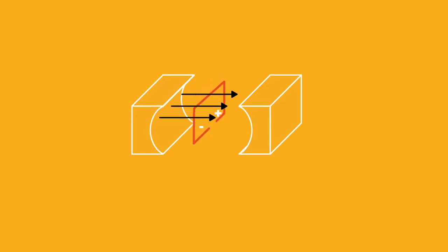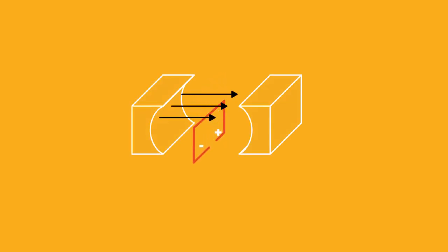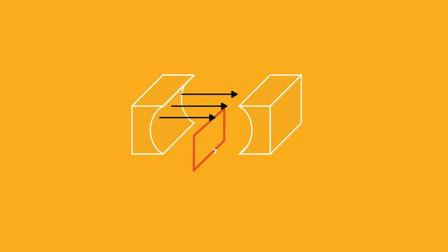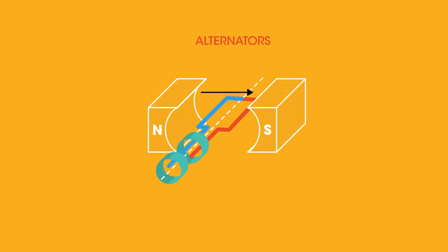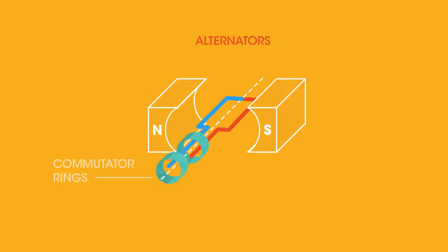Before we start, you should already know that when a conducting wire passes through a magnetic field, a potential difference is induced in the coil of wire. If the wire is a complete circuit, then a current is induced. Whether we induce an alternating or direct current is to do with these rings here, called commutator rings.